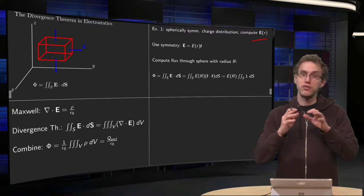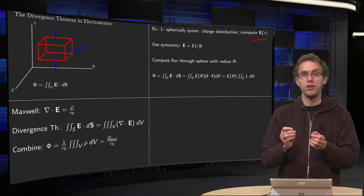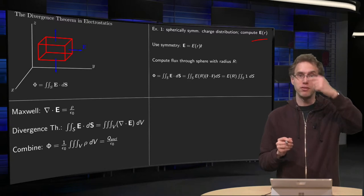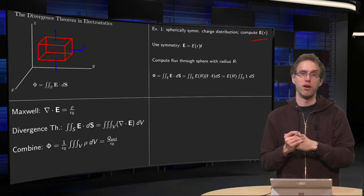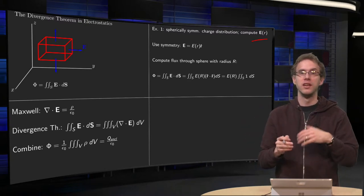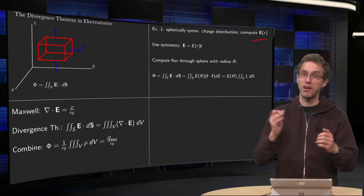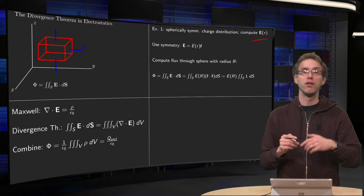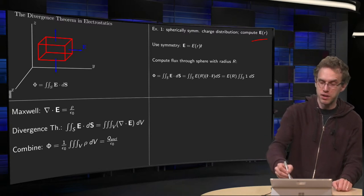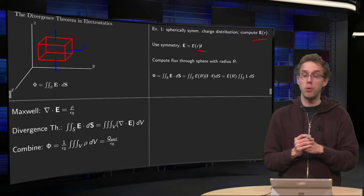Now you have a spherically symmetric distribution, so your field can only depend on R, because if you would rotate, you see the same, so the electric field cannot depend on phi or theta, and furthermore, for the same reason, the electric field has to be in the R-hat direction only.